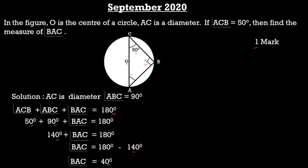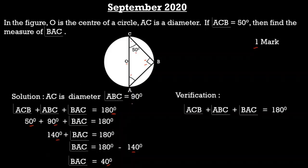If you want to verify the answer is correct, just add all the angles of the triangle: 50 plus 90 plus 40 is 180. So the answer is correct.